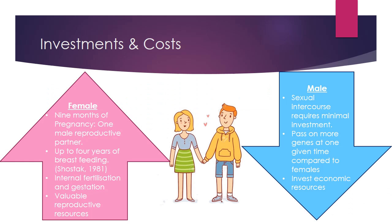We will now consider the investments and costs of men and women. For females, the costs and investments appear higher than for males. This is because impregnated females have to carry the baby for nine months, and even after pregnancy the female may choose to invest more time to breastfeed, giving up the opportunity of another reproductive partner. Whereas males can pass on more copies of their genes in the same period of time. Females may need to be more selective in acquiring a male mate, as women have a limited amount of gametes, whereas males have a large amount of gametes that are replenished daily.